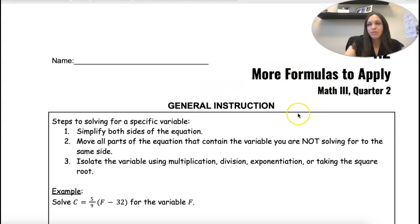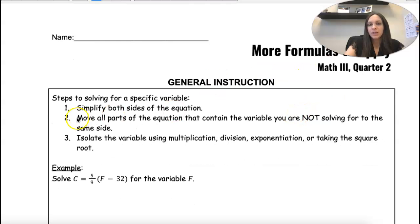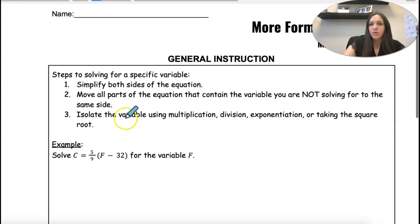So 4.2 is more formulas and we're just going to start solving for different variables. So when we do that, we simplify and then we isolate the variable we're looking for just using our solving skills.